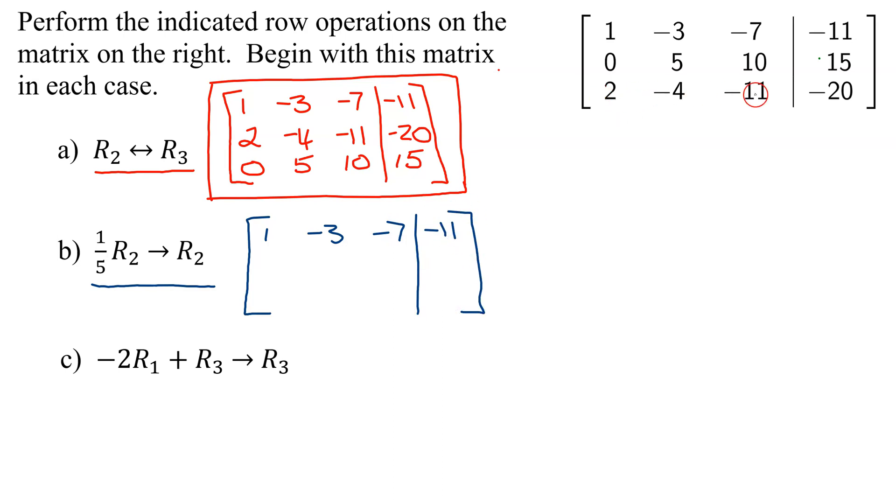Row 3 is going to be 2, negative 4, negative 11, and negative 20.